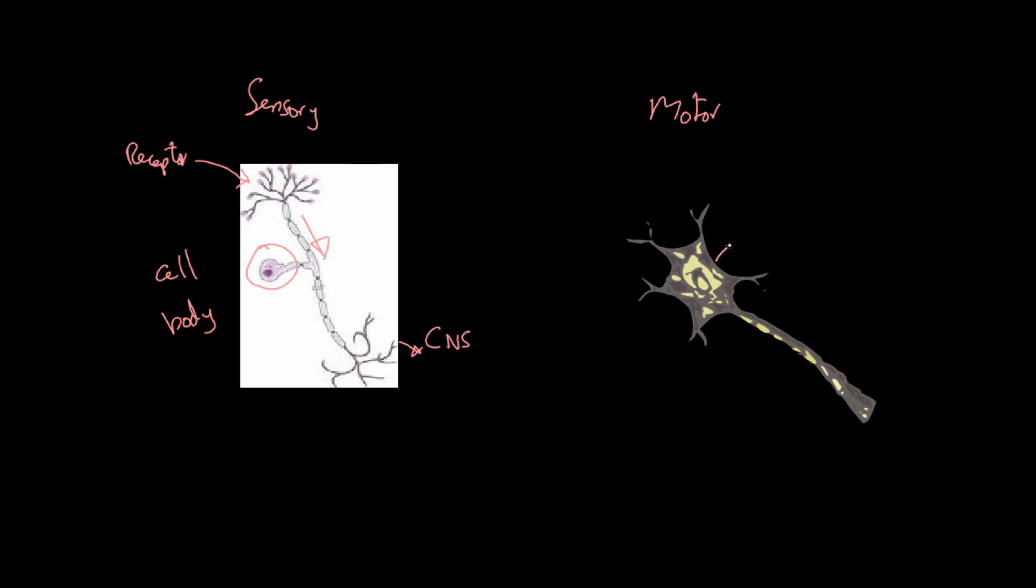Now a motor neuron, this here is the cell body. The cell body, rather than being pushed to the side, is bang in the middle. That's because the CNS will be located up here, and it can directly reach this cell body and pass a signal through the neuron. The signal will then go this way, and it will end up with nerve endings which will attach to effectors. So this will be attached to your effectors.